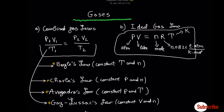From the combined gas law we can derive Boyle's law, which applies when we operate at constant temperature and number of moles. This means we can simplify temperature from the combined gas law, giving us the relation P1V1 = P2V2. Keep in mind that P is the pressure, V is the volume, and T is the temperature.